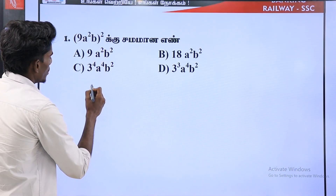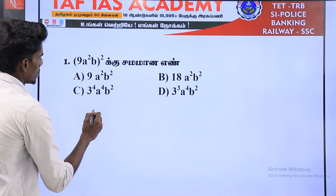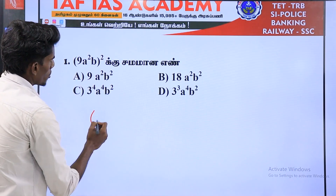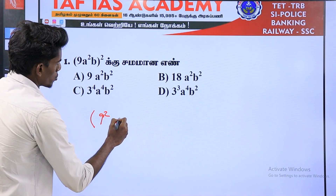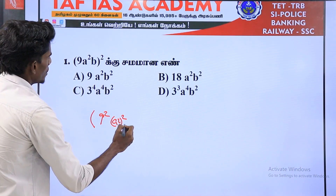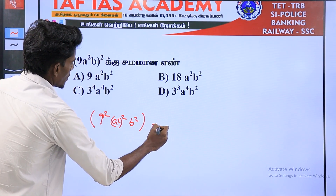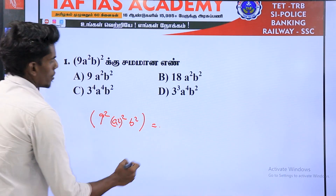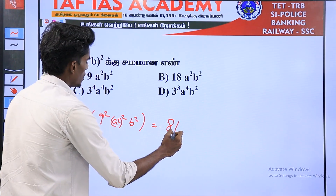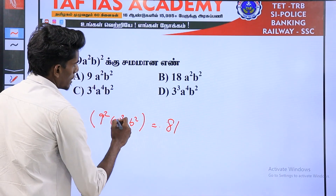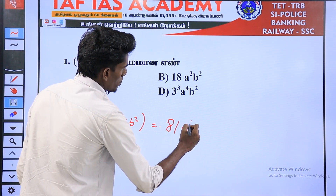A square to the power square B square. 9 square is 81. A square to the power square is A to the power 4.